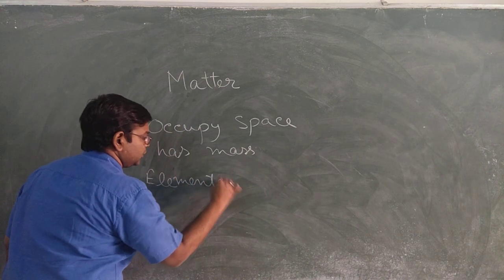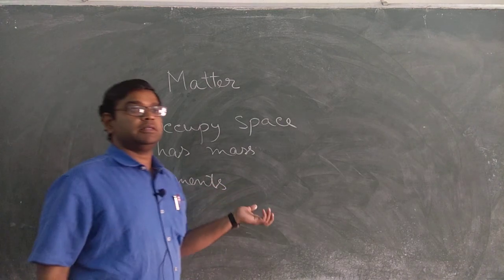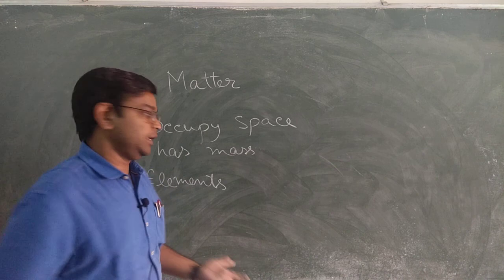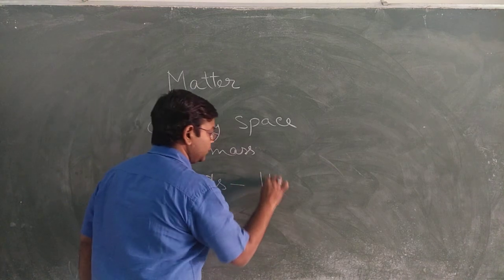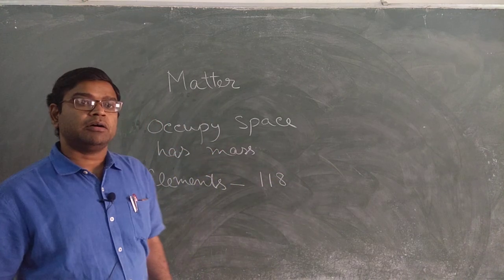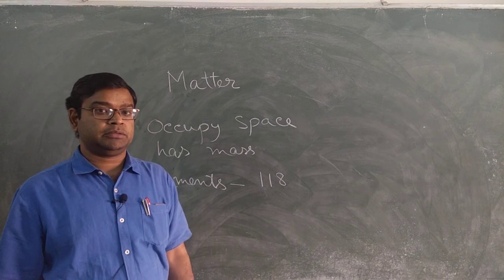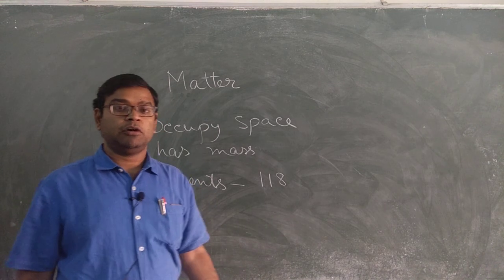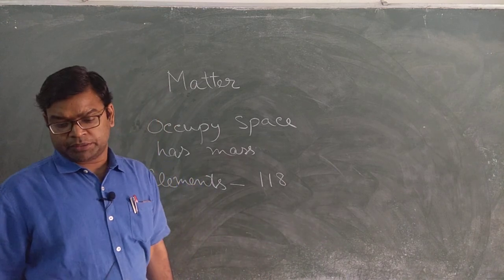Till now, we have discovered in our surroundings that there are 118 elements present on our surface, in our neighborhood. For example, iron, copper — all these things are your elements.